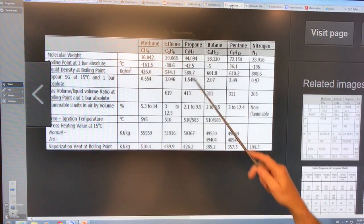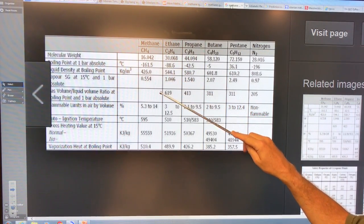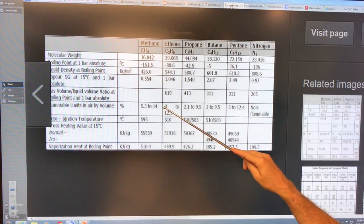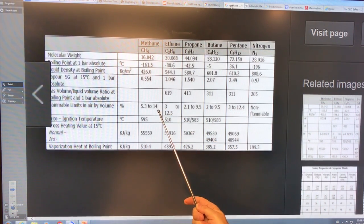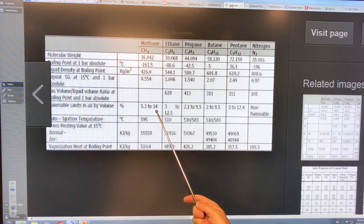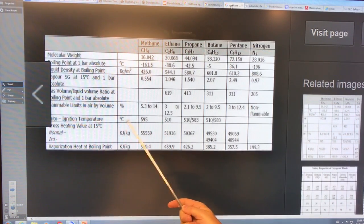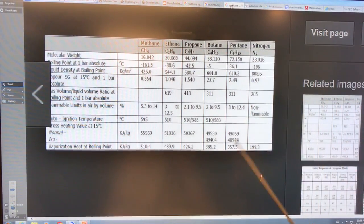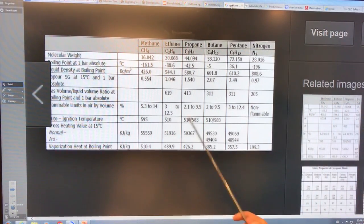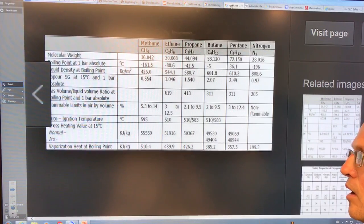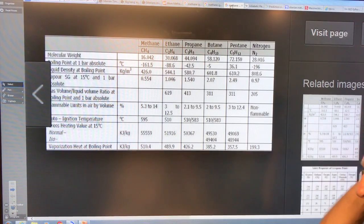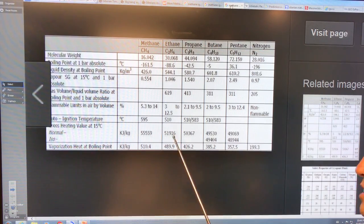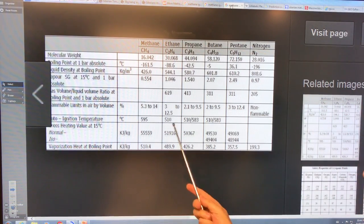Some properties of methane. Flammable limits in air by volume 5.3 to 14 percent. About eight and a half is where it's easiest to ignite. Auto ignition temperature 595 Celsius. This will be at one atmosphere. So you've got to go to really high temperature. So if the methane is auto igniting in the ground, one, there has to be oxygen and two, it has to be very high temperatures. How could it be such high temperatures unless it came from deep within the earth?